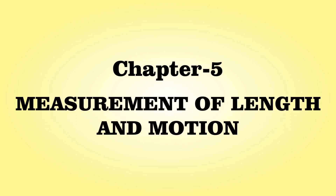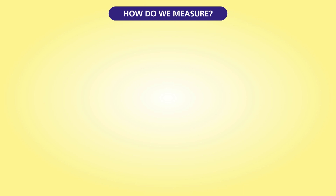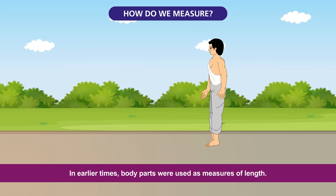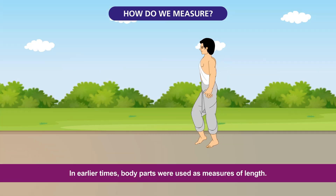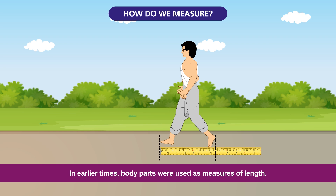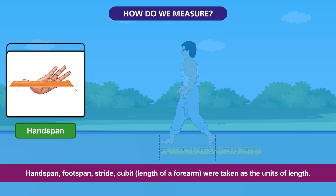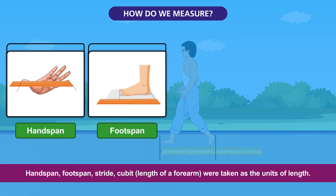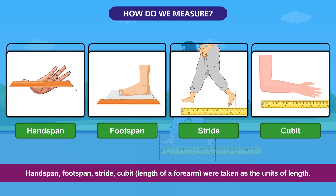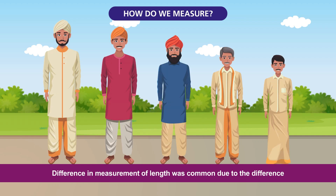Chapter 5: Measurement of Length and Motion. How do we measure? In earlier times, body parts were used as measures of length. Hand span, foot span, stride, cubit, and length of a forearm were taken as the units of length. Difference in measurement of length was common due to the difference in size of body parts from person to person.